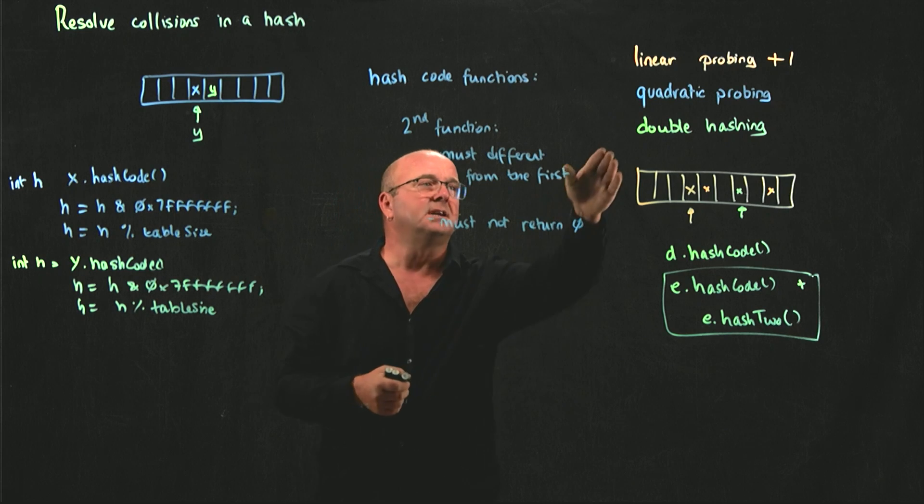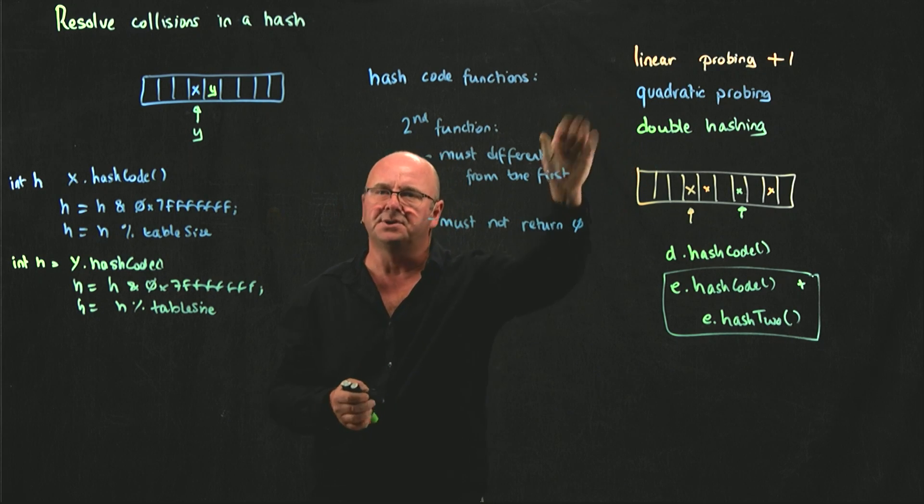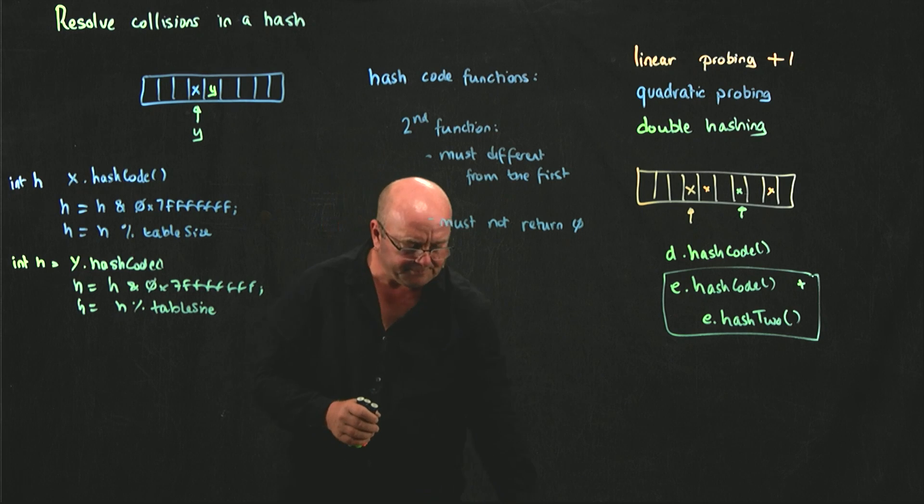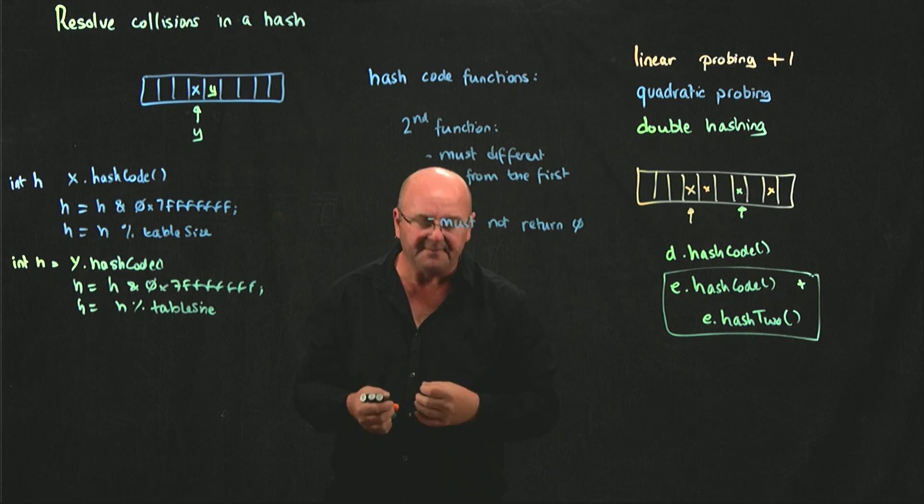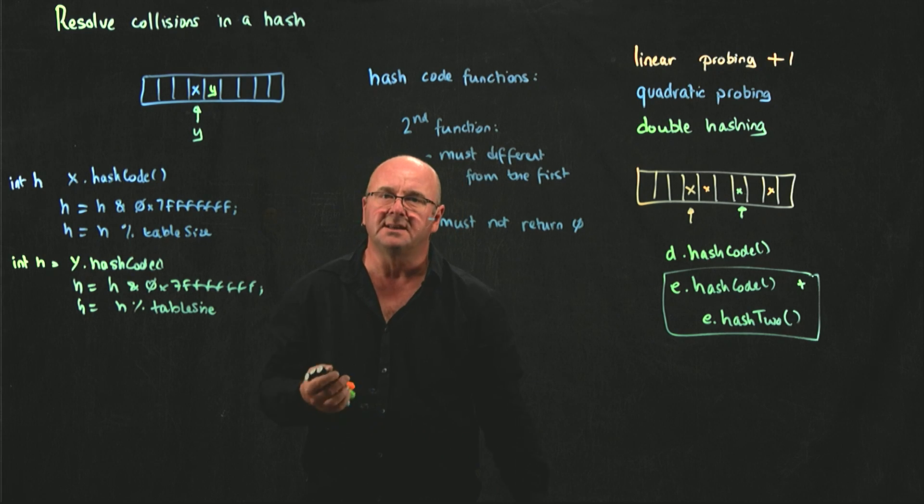So, double hashing is an alternative to linear and quadratic probing, but both of those have problems in that the table becomes full quite quickly.